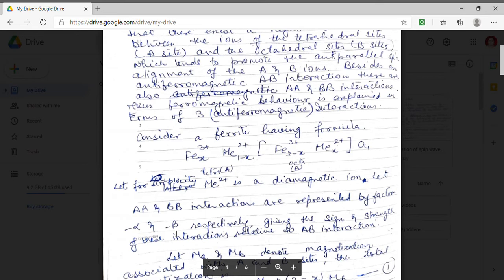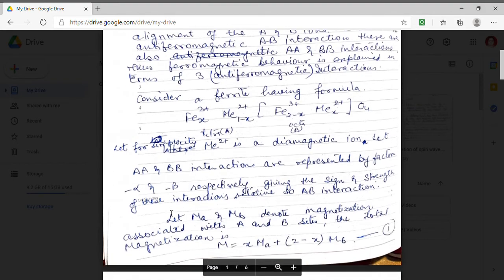Now I have to find out the total magnetization. In order to find the total magnetization I am assuming that at A site let the magnetization be MA and similarly the magnetization at B site is MB. So we can express the total magnetization of our ferrite by capital M.